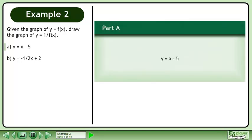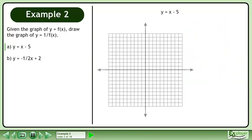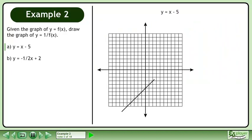Given the graph of y equals f, draw the graph of y equals 1 over f. In Part A we will graph the reciprocal of y equals x minus 5. Draw the graph of y equals x minus 5.